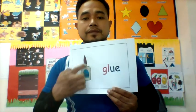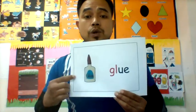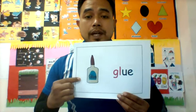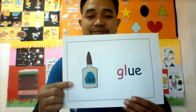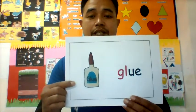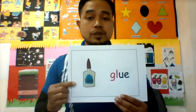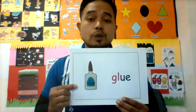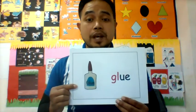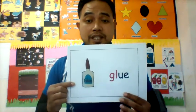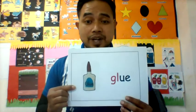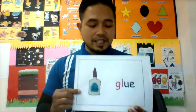Can everyone say glue? Very good. So glue — we use it to do what? We use it to paste papers together so they can stick together, right? Very good. Now let's look at the next image.